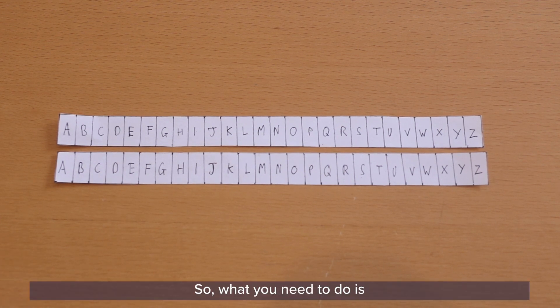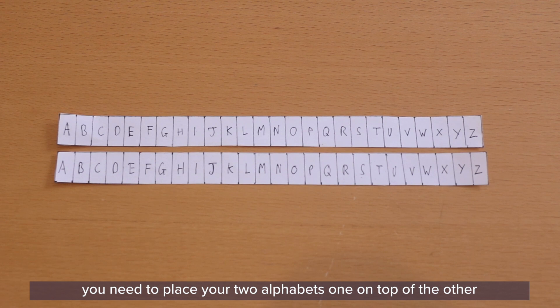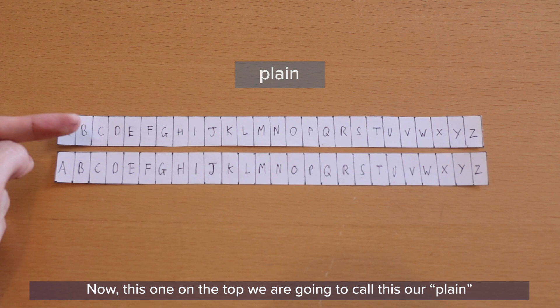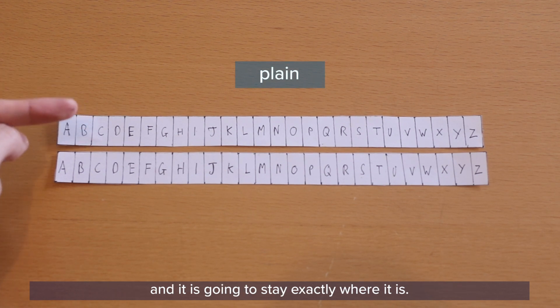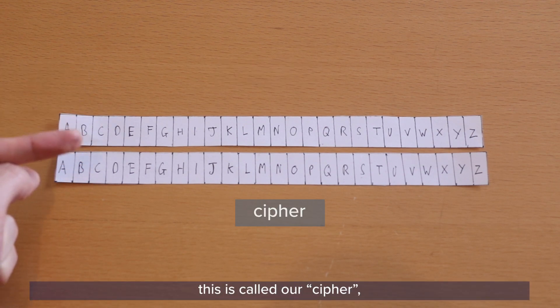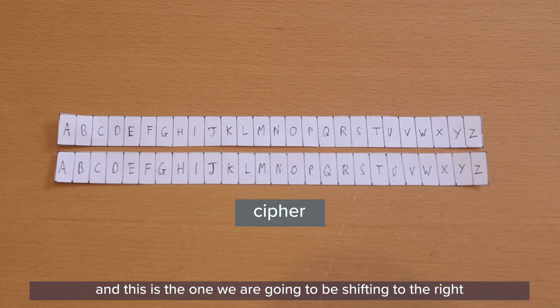So what you need to do is you need to place your two alphabets, one on top of the other, like I've done here. Now this one on the top, we are going to call this our plane, and it is going to stay exactly where it is. The one underneath, this is called our cipher. And this is the one that we're going to be shifting to the right to then scramble our letters.